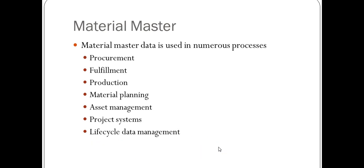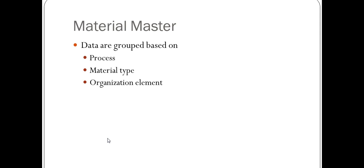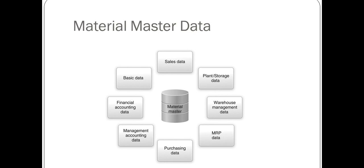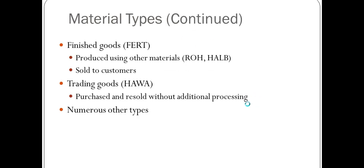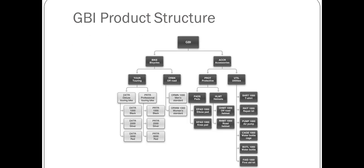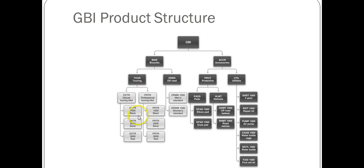Material master data can involve numerous processes and depends on material type and organizational elements — the sources can come from different areas. Looking at the GBI product structure, you have bicycles and accessories, then two different types of bicycles each linked to further types of materials, and the same structure applies to accessories.